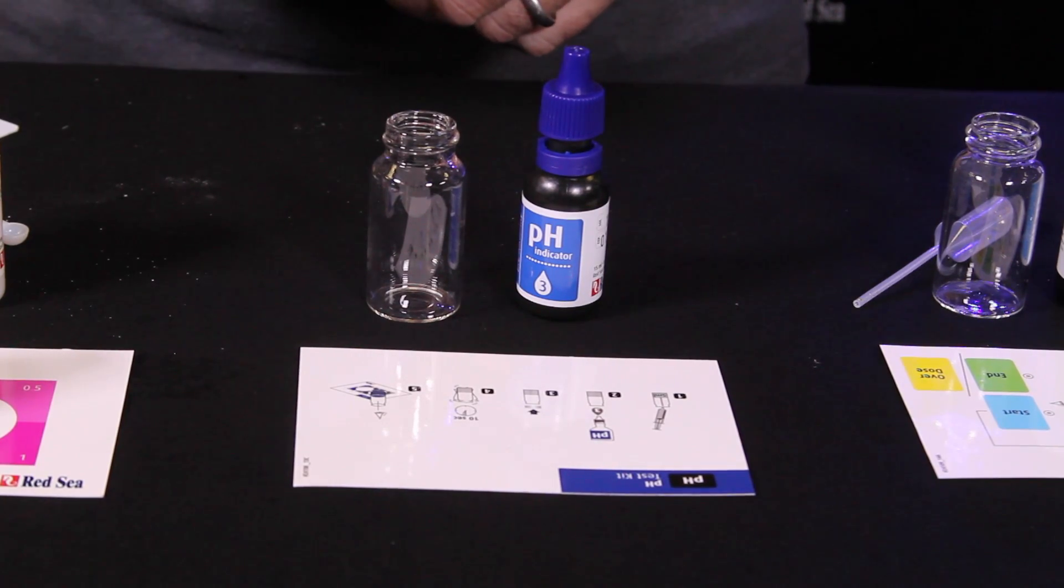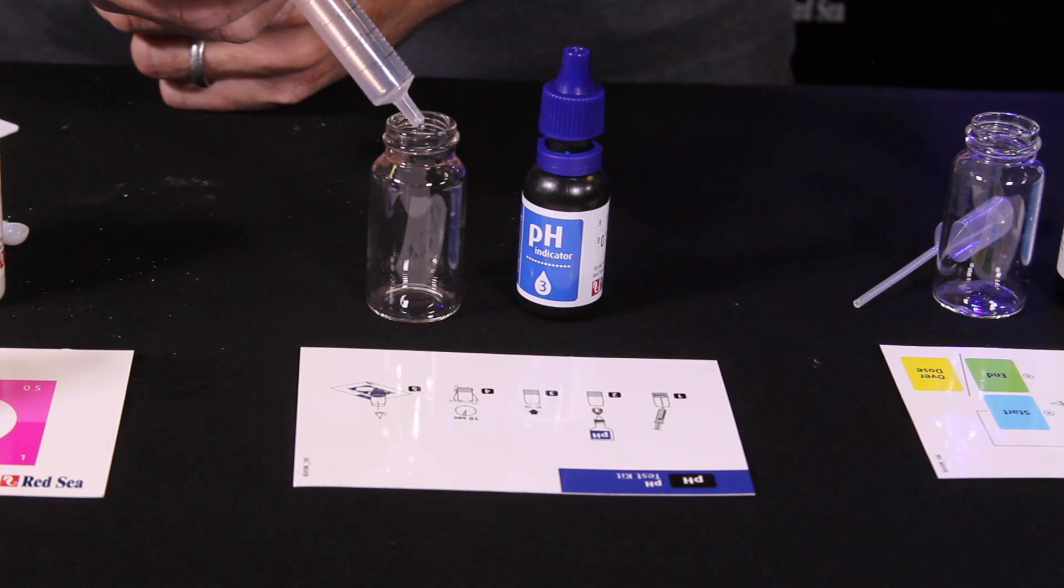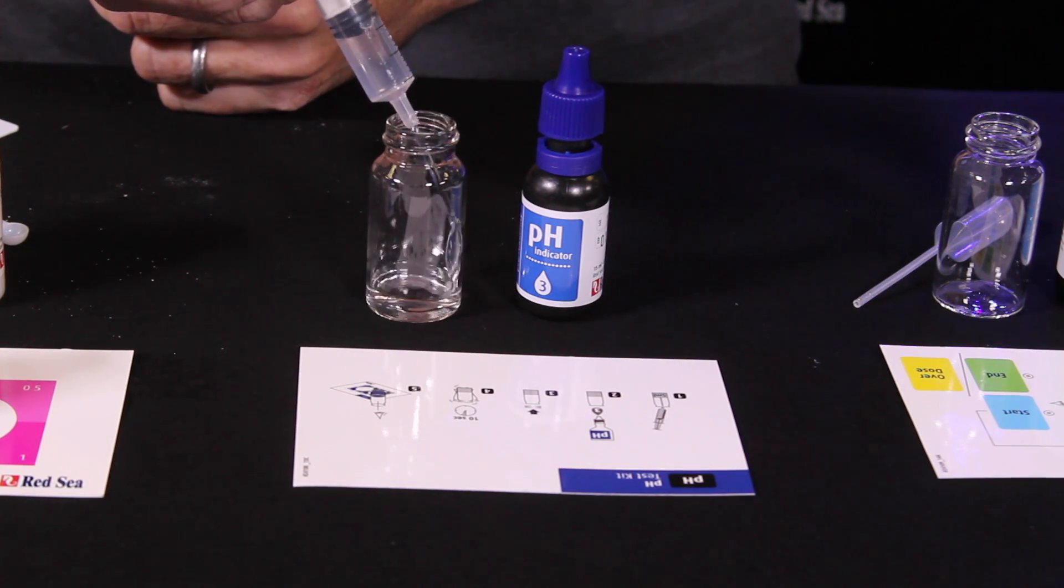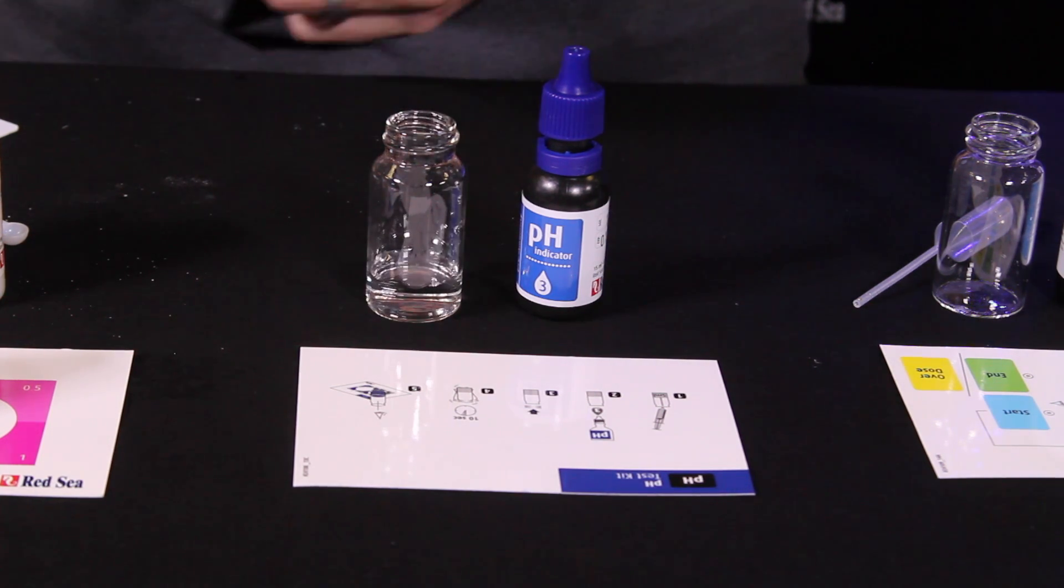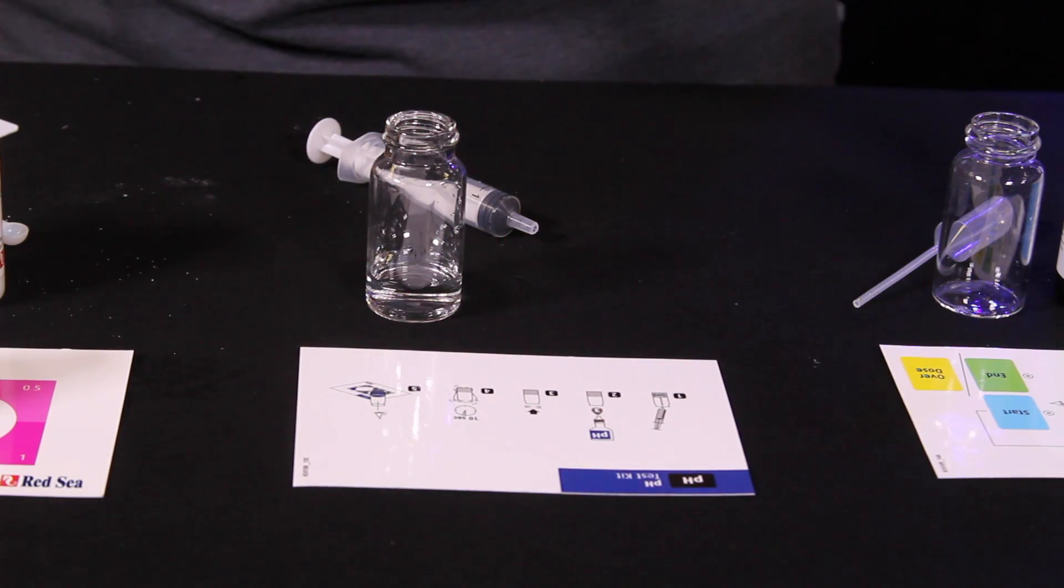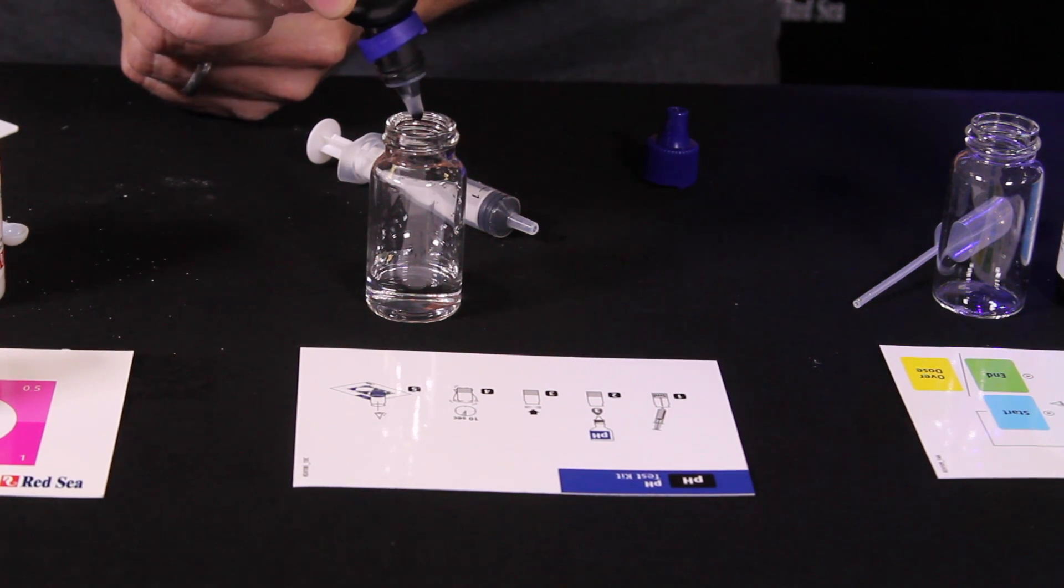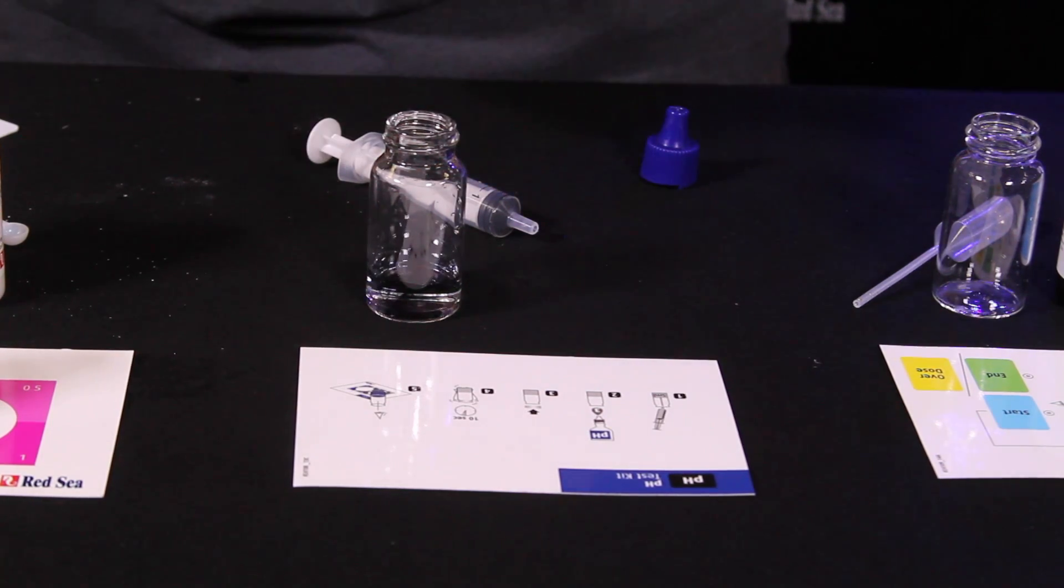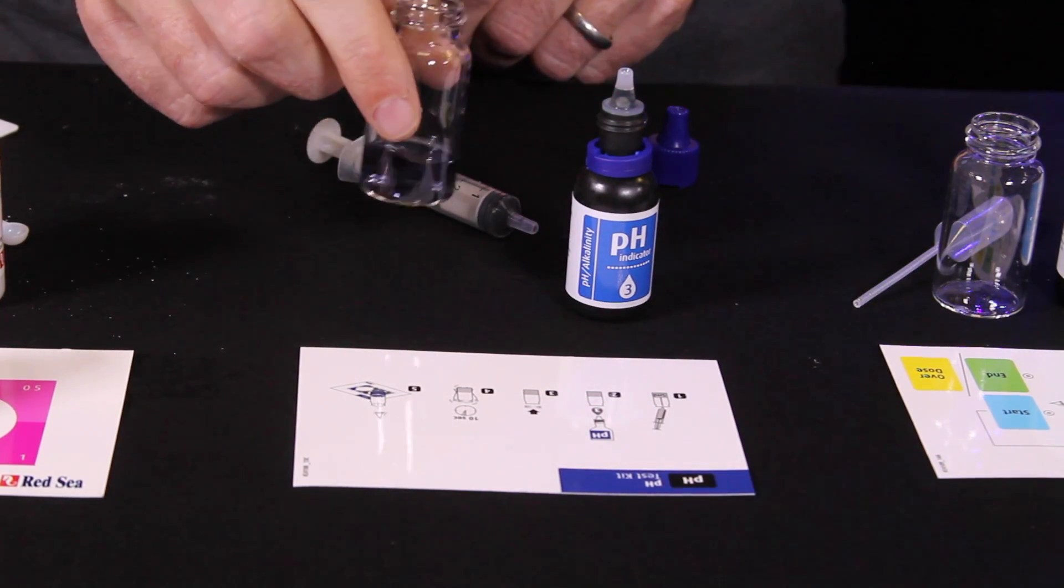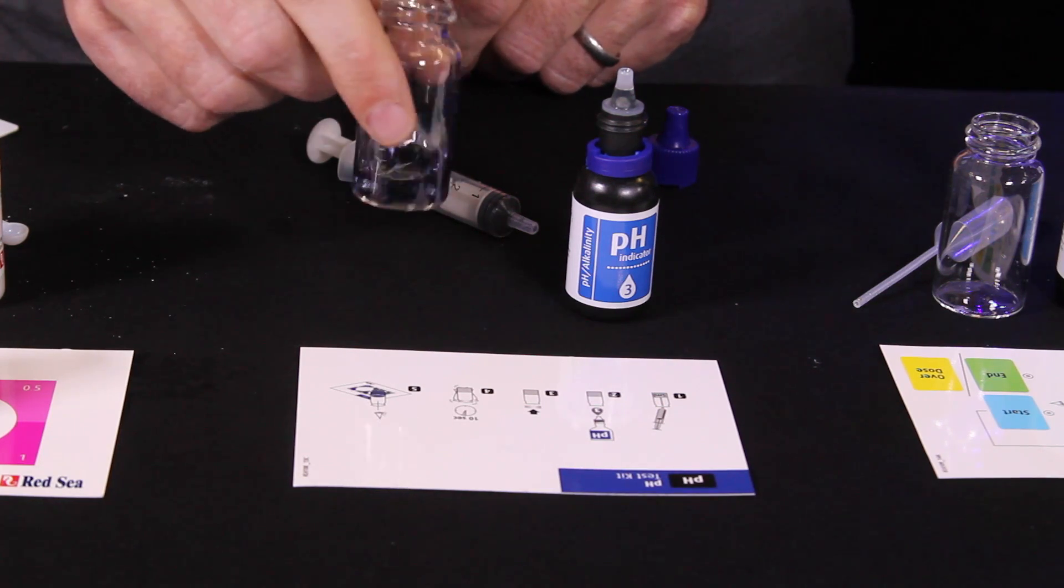All right, now let's test the pH of our aquarium. We're going to start by adding five milliliters of sample water from the tank per the instructions. And then we need to add three drops of the pH reagent. One, two, and three. The pH test is a very simple, easy one to do. Swirl for 10 seconds.